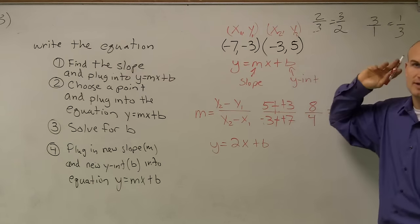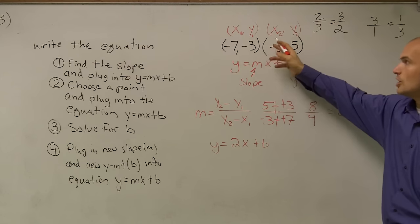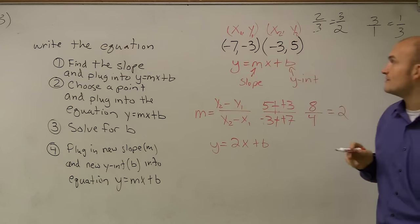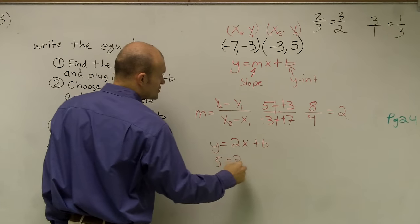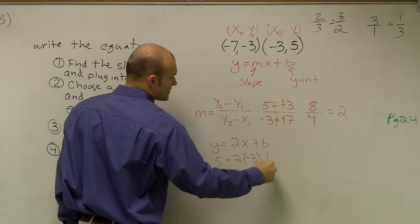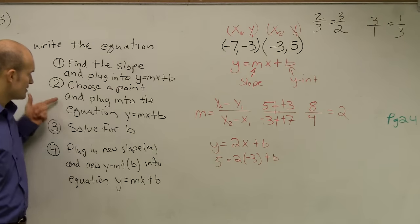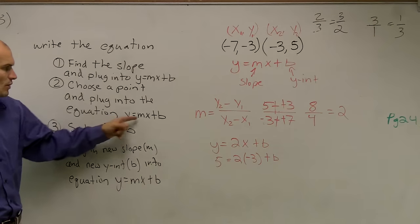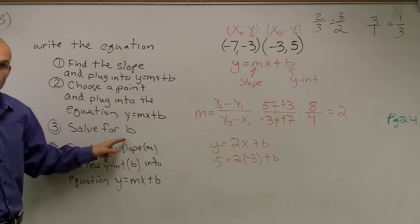So I'm going to choose this point. It doesn't matter if it's x1 or x2, y2. It has nothing to do with it. So we still know this is your x value, and that's your y value. So I'll say 5 is my y equals 2 times x, which is negative 3, plus b. Then it says choose your point and plug into your y equals mx plus b, which I did. Then solve for b.